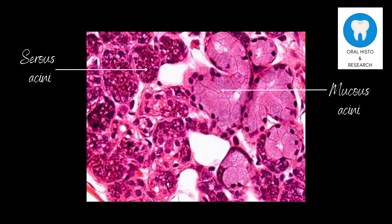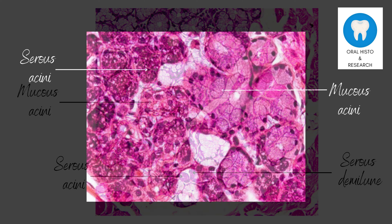Histologically, the submandibular gland contains two types of acini, which are the functional units responsible for secreting saliva. The first type is serous acini, which contains serous cells that secrete a watery saliva rich in enzymes that aid in the initial digestion of food.